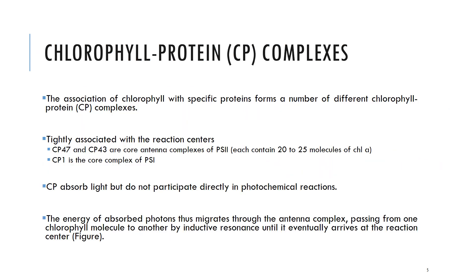Now we will discuss the last part — the photosynthetic machinery of the antenna complex and its proteins. A number of chlorophylls function in the bulk of the photosystem as antenna chlorophyll, associated with specific proteins to form a number of different chlorophyll-protein complexes, known as CP complexes. Tightly associated with the reaction centers P680 and P700 are core antenna complexes. In the case of PS2, there are two chlorophyll-protein complexes: CP47 and CP43.